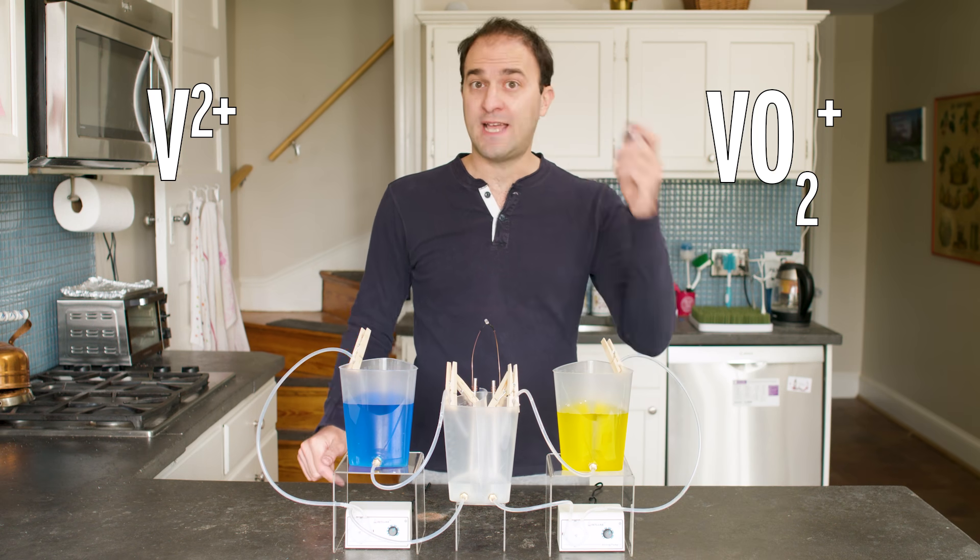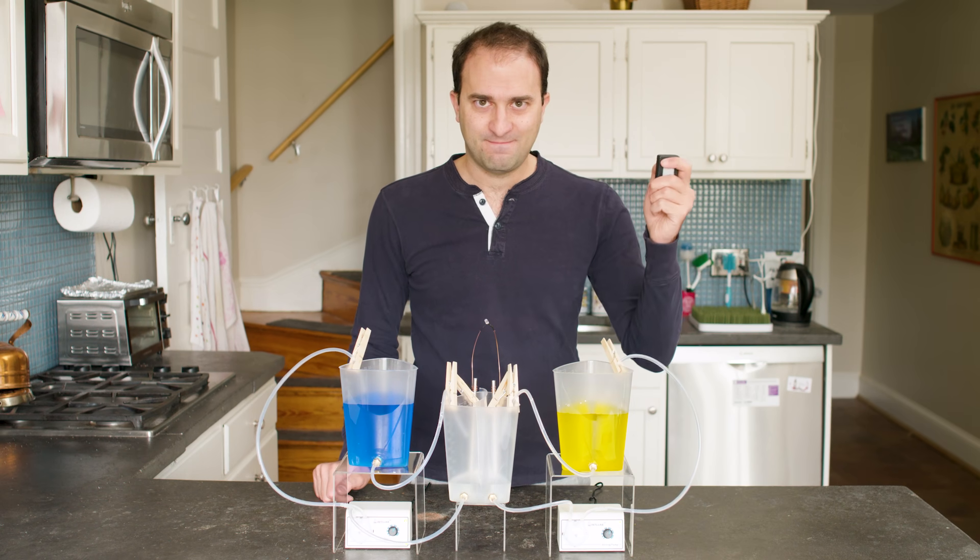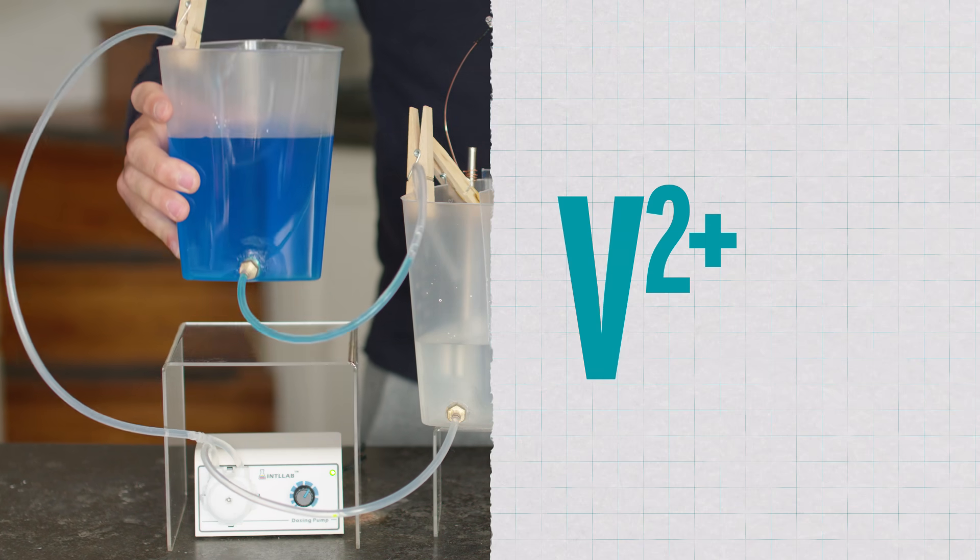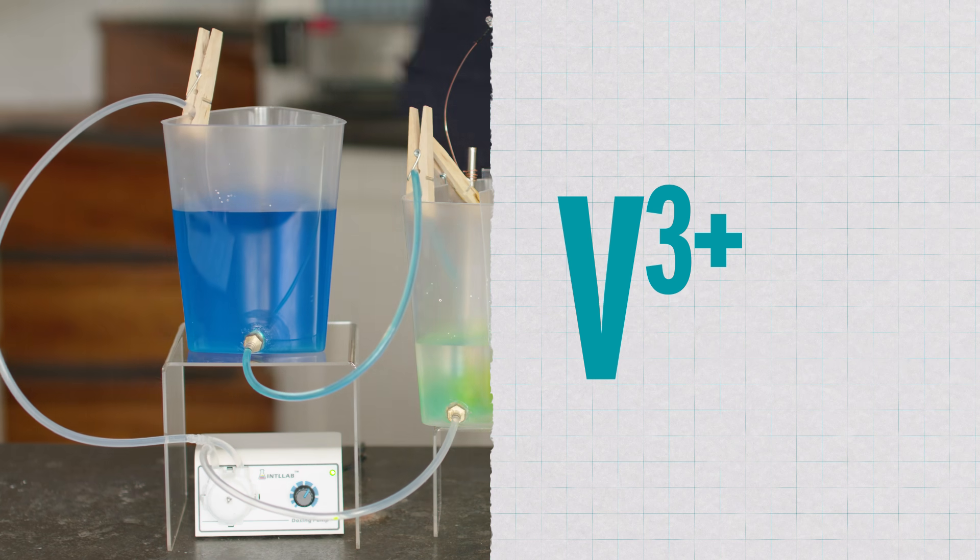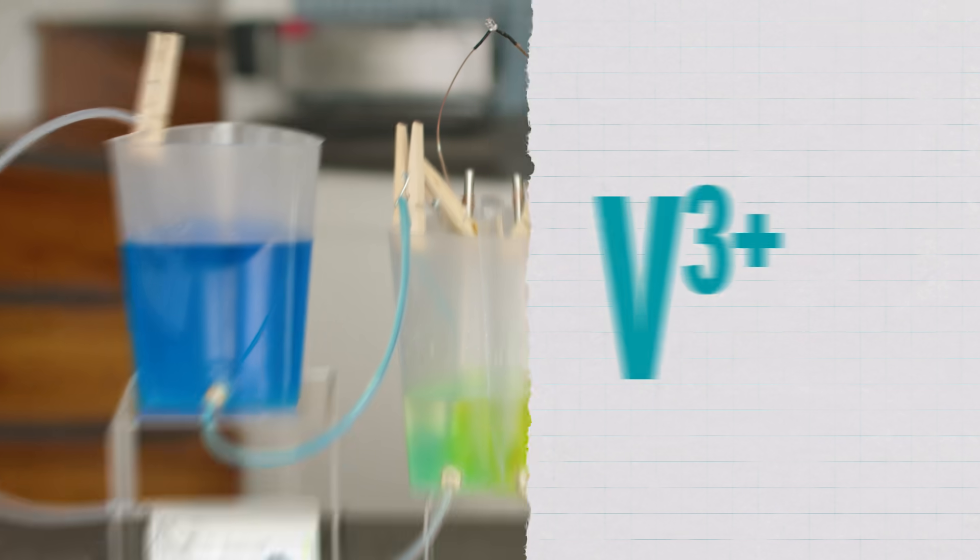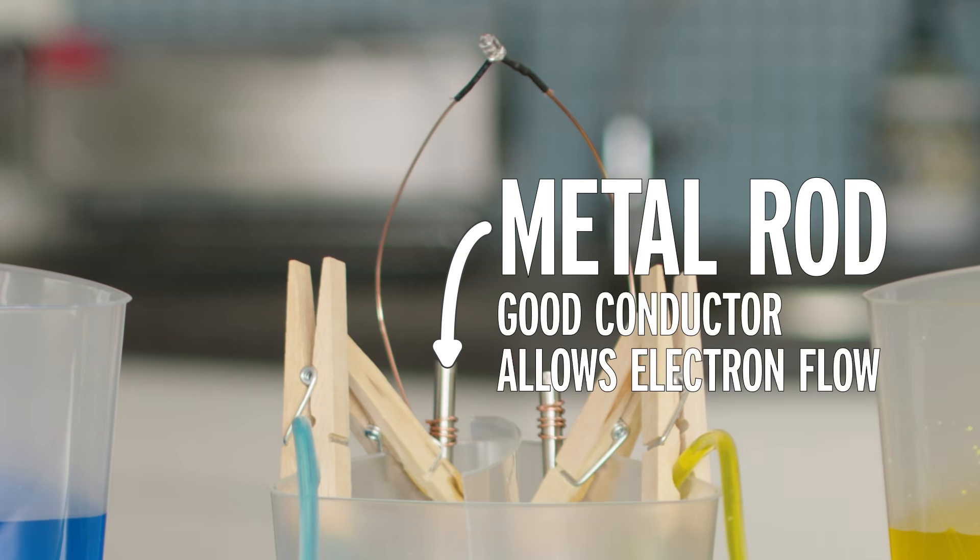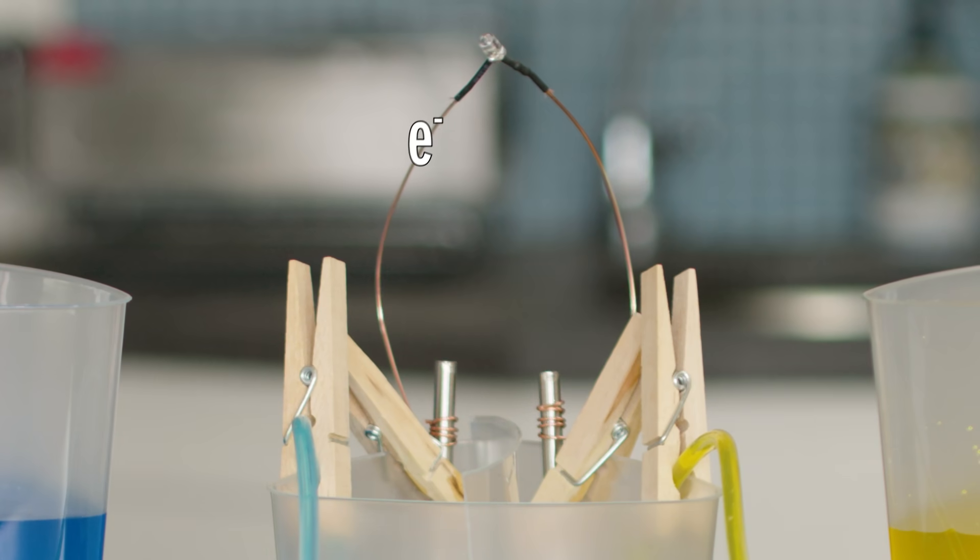Let's turn on the pumps and see what happens. In this chamber, the vanadium 2+ is giving up an electron to become vanadium 3+. This half reaction happens at the surface of this metal rod, because metal conducts electricity well. Those electrons travel up through this wire, up through whatever the battery is connected to, in this case an LED, and down over to here.